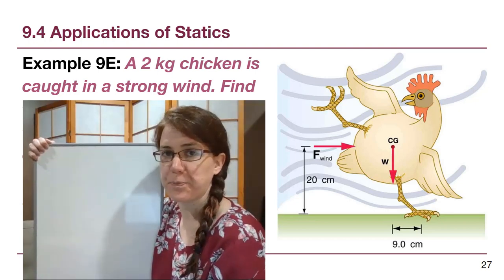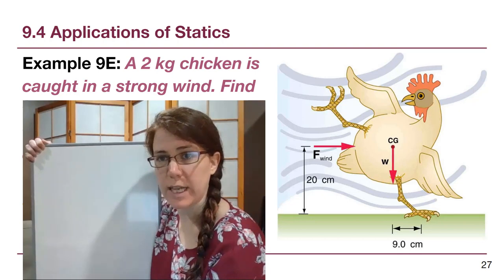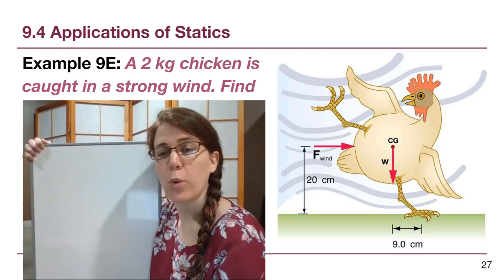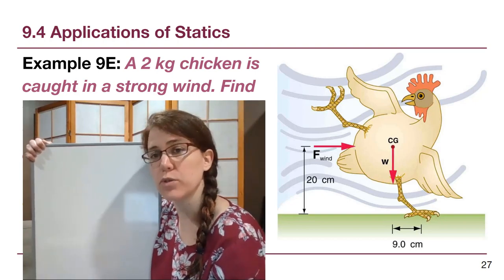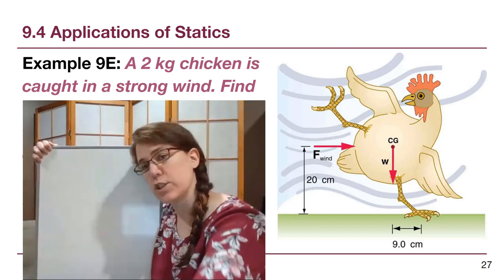Even before we write anything down, if we look at this picture we will recognize a couple of things. First of all, if the wind is too strong it will cause that chicken to rotate from being held up by the wind to falling over, rotating one direction.